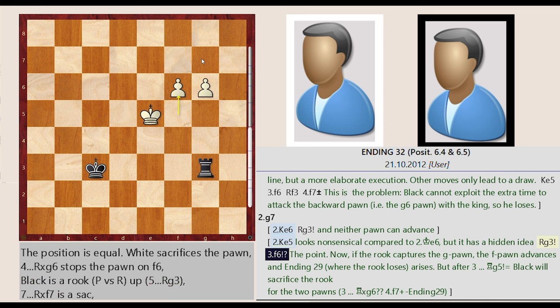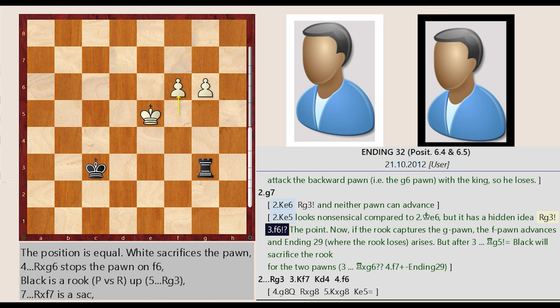But after g5 equals, black will sacrifice the rook for the two pawns. Captures g6, f7 plus, ending 29.